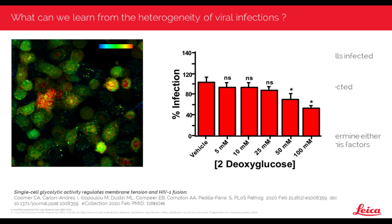I will show you first that this is the case, and then we'll see how through imaging we can decipher the underlying mechanisms. Here we see a percentage of infection in cells, and when we add 2-deoxyglucose to disrupt cell metabolism, there is a decrease in infection. This shows a reduction in HIV-1 VSVG envelope infection of MT4 T cells with increasing doses of 2-deoxyglucose. MT4 T cells behave metabolically and for infection purposes just like CD4+ T cells. I invite you to go read the paper published earlier this year for all the details.